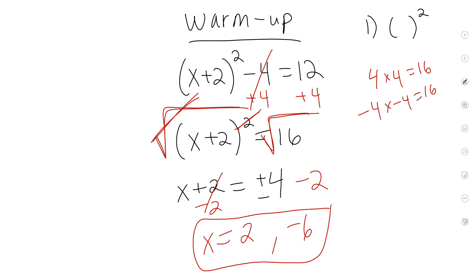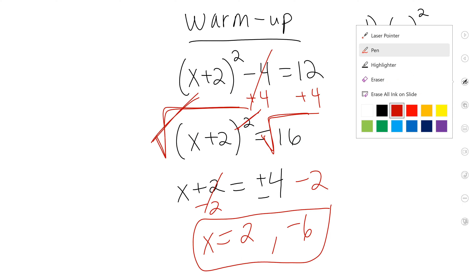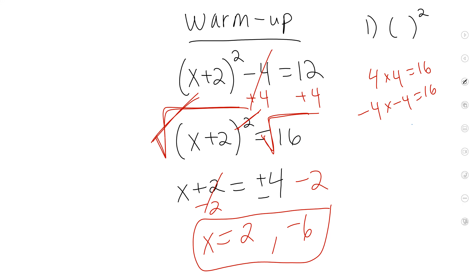How would I check to make sure these are right? You could plug it in. If I plug in negative 6, what's negative 6 plus 2? Negative 4 times negative 4 minus 4 is 12. So that worked. Let's plug in 2 this time. What's 2 plus 2? 4 squared is 16, minus 4 is 12. So both of those answers, when you plug them in, make sense.